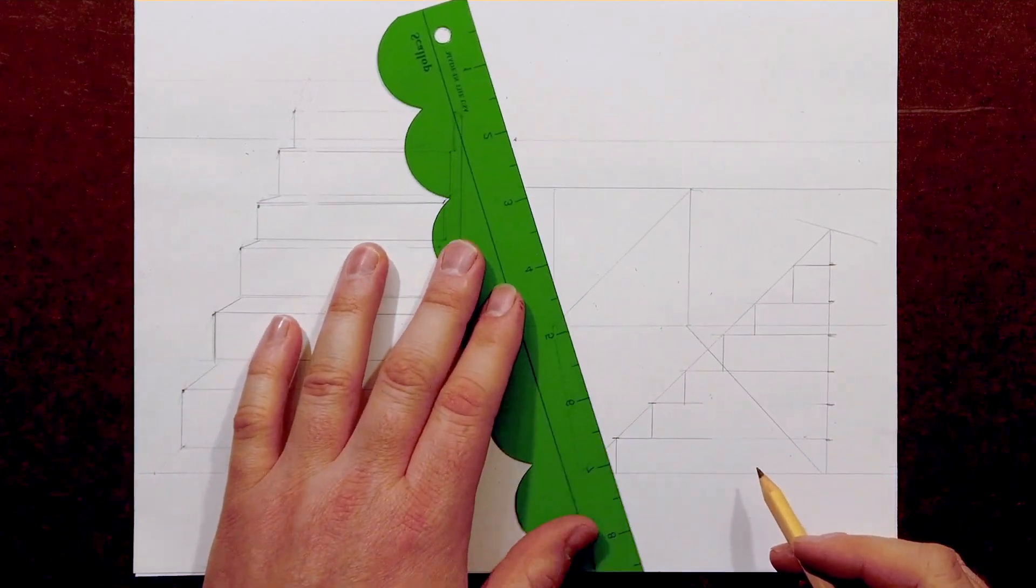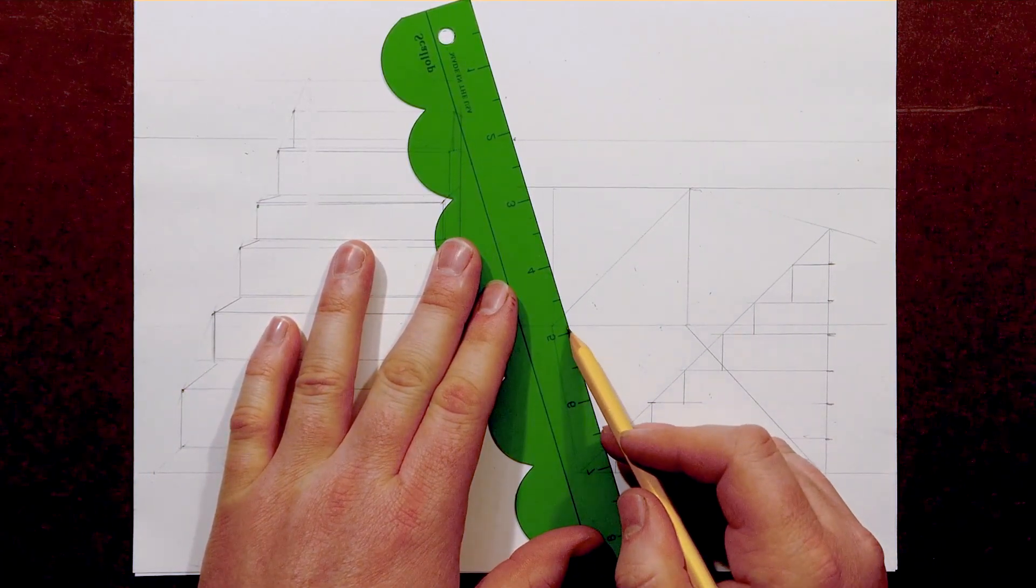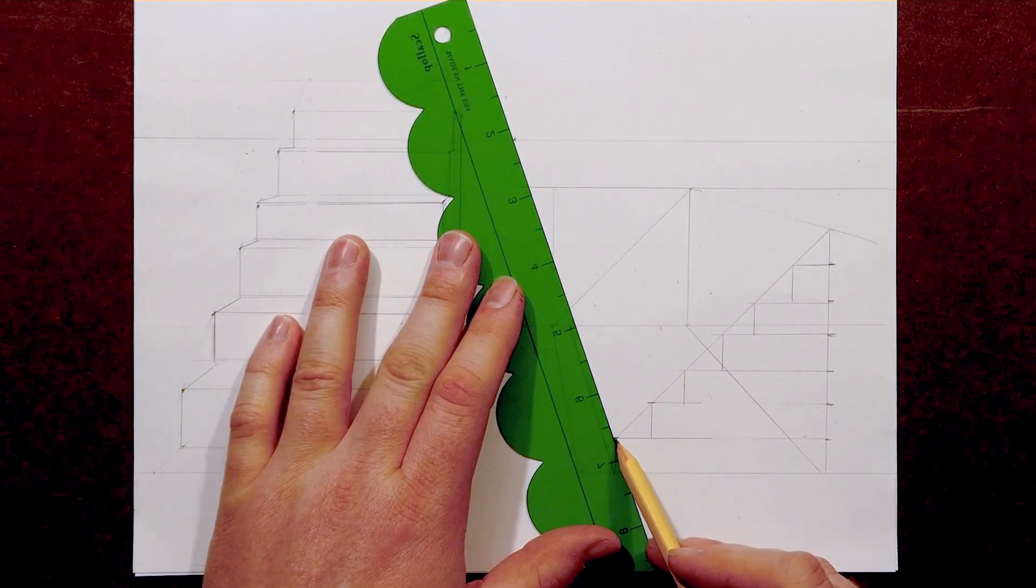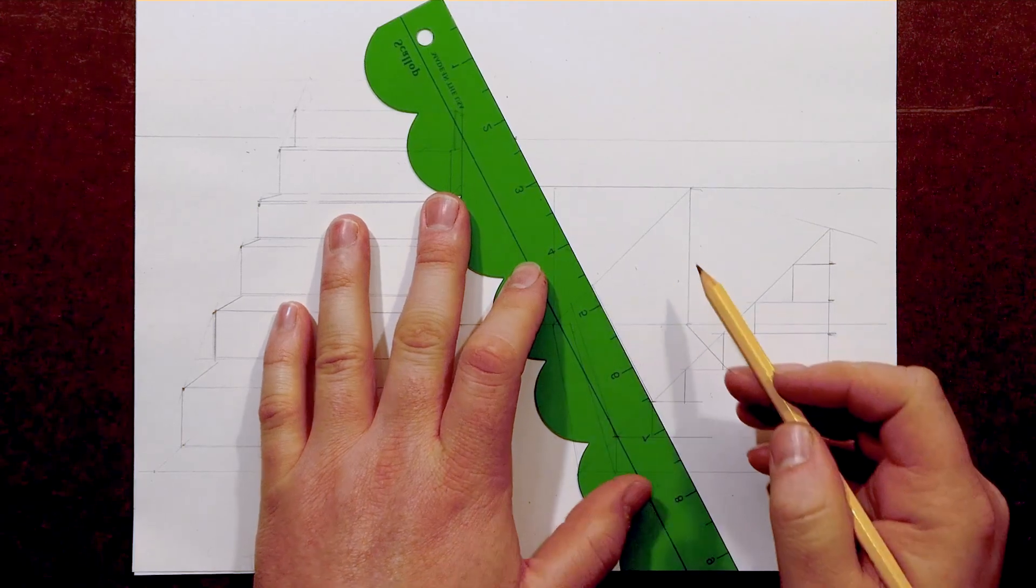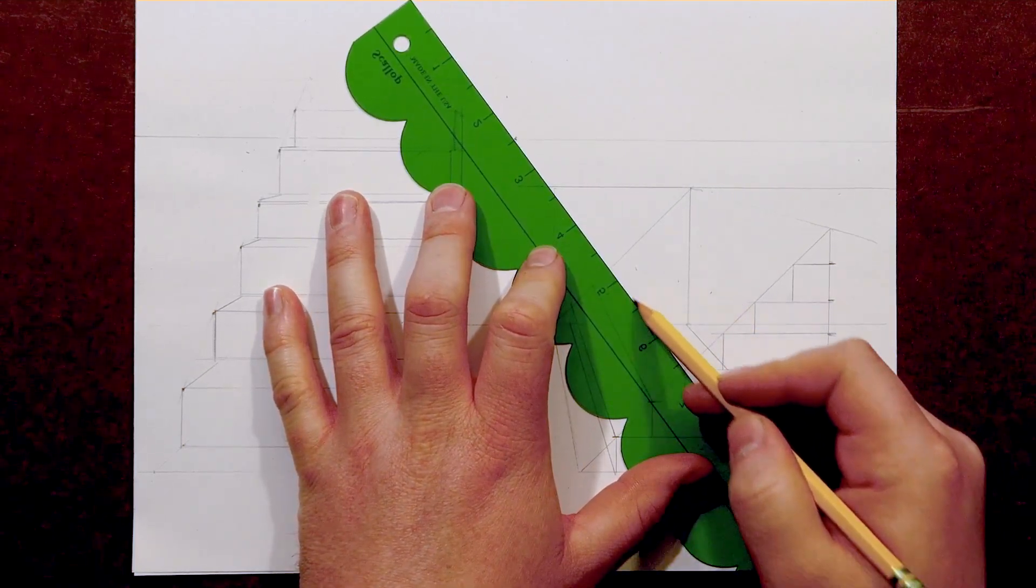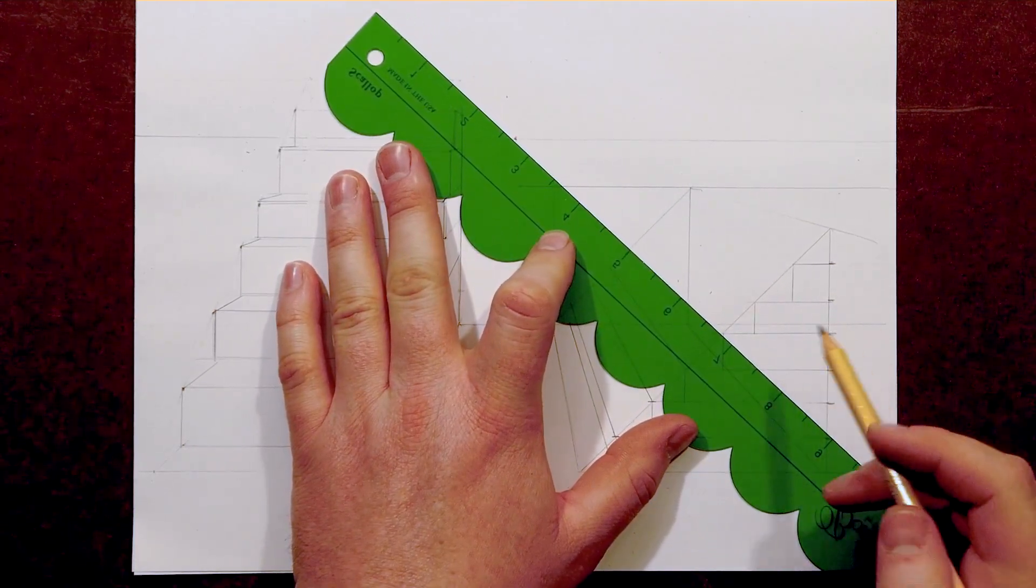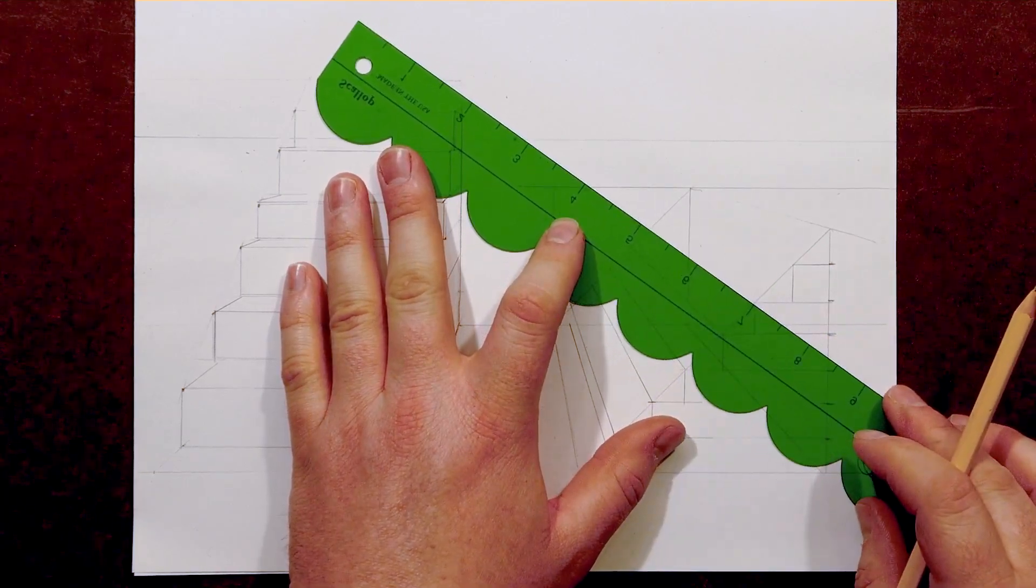Now that we've drawn the shape of the stairs, we're going to wrap it around the wedge form. We're going to extend those lines by connecting them to the vanishing point and stopping where they intersect with the far end of the wedge shape. Think of it as a container for our stairs.